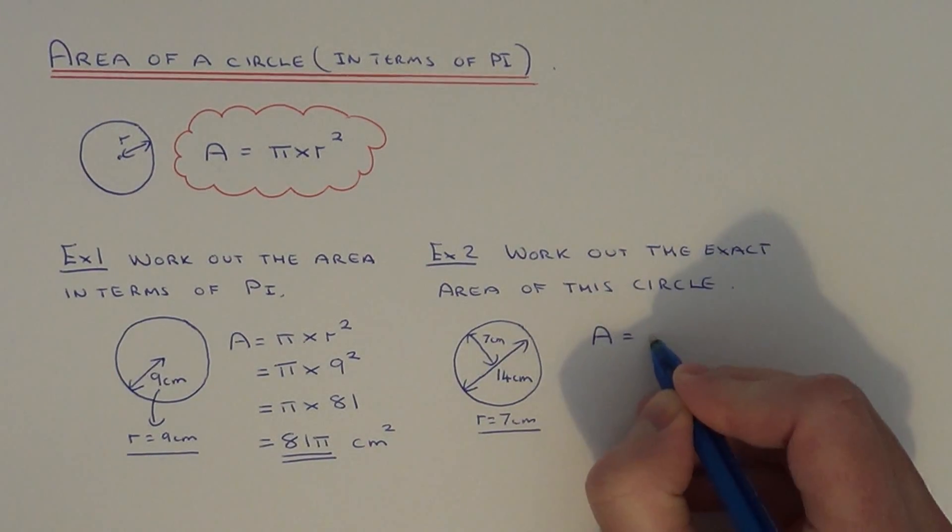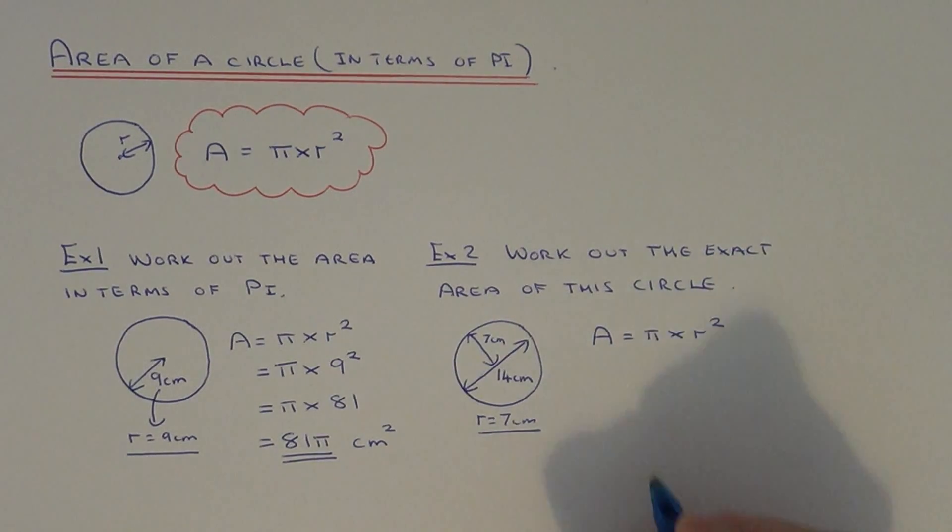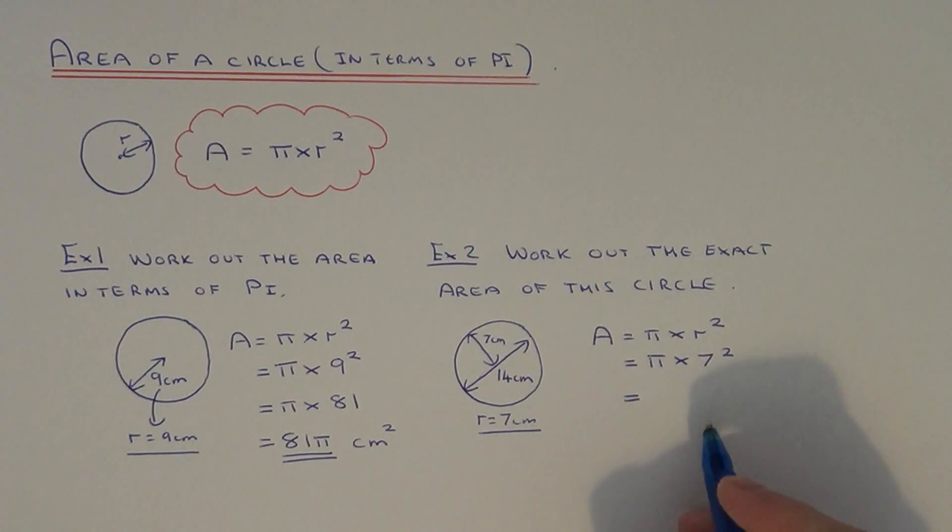Again, I'll write the formula down for working out the area: pi times radius squared. If we substitute our radius, which is 7, our next line will be pi times 7 squared. Work out your square: 7 squared is 49, so we get pi times 49.